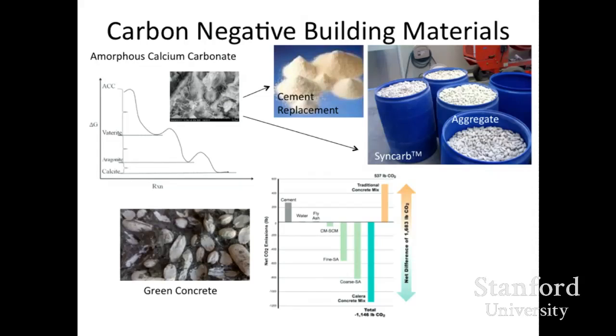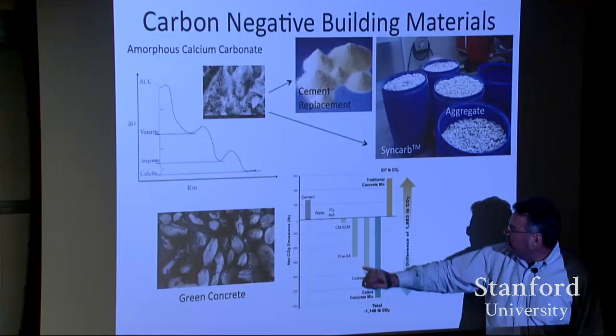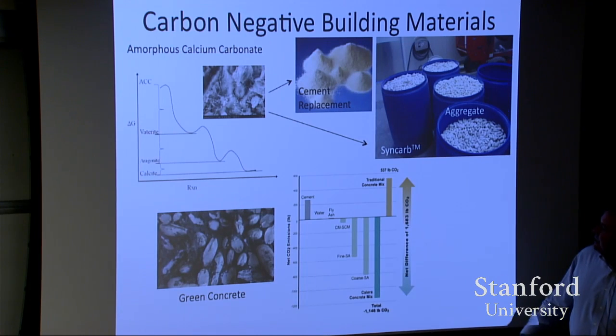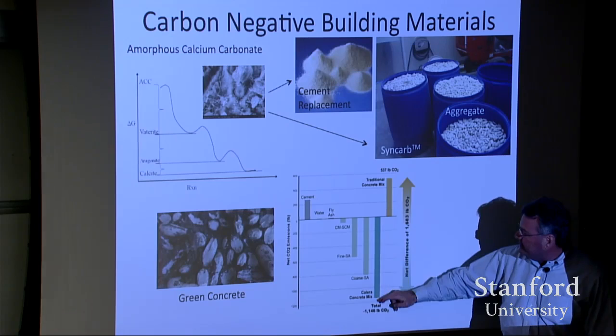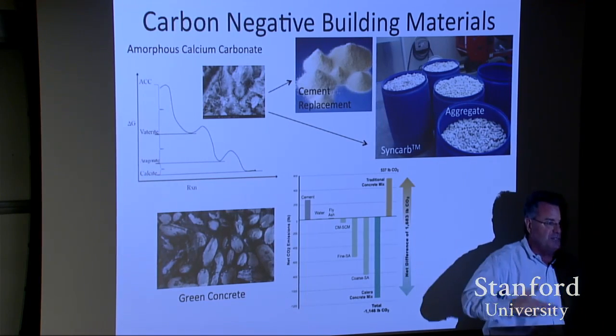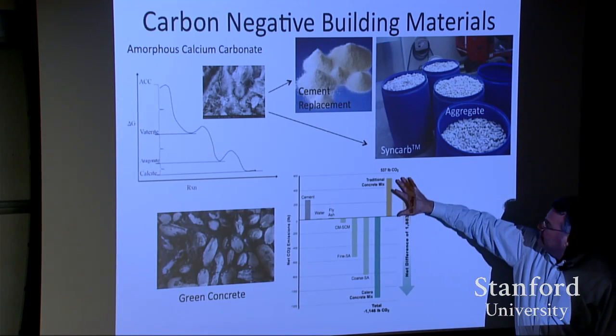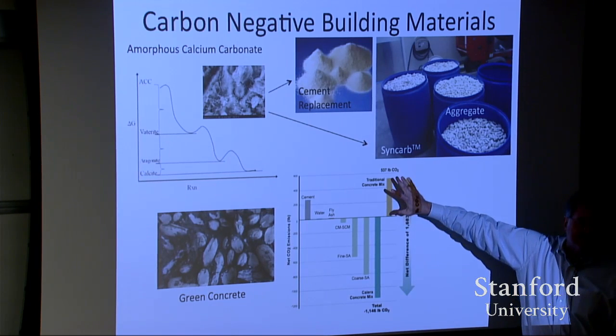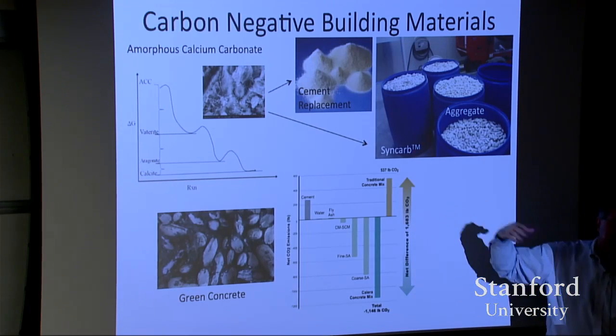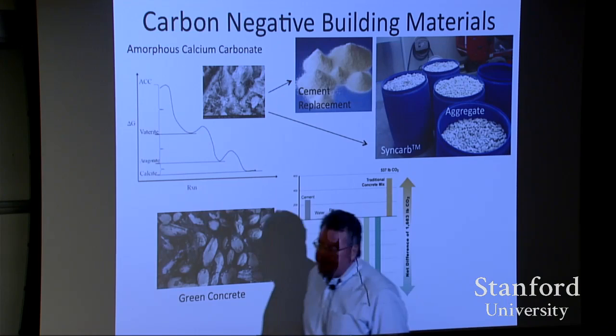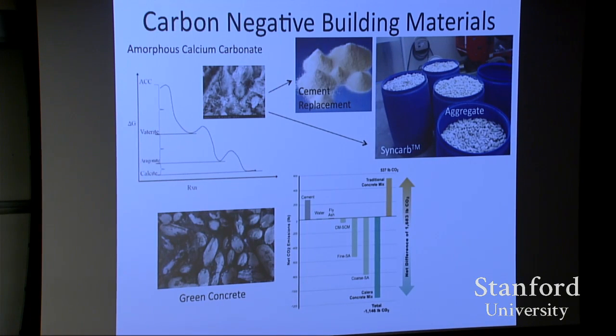It's possible to make these building materials carbon negative. A traditional yard of concrete has a carbon footprint around 500 pounds of CO2 per yard. If we replace some cement and sand and gravel, we can make net CO2 about negative 1,100 pounds, meaning 1,100 pounds of CO2 was captured, turned into mineral, and used to make concrete. If we also consider the concrete that wasn't formulated, it's actually a net of 1,600 pounds net negative CO2.